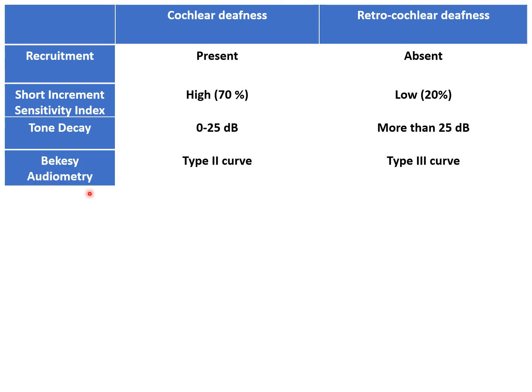Bekesy audiometry can also differentiate cochlear and retro-cochlear pathology. It is a type of self-recording audiometry. In cochlear pathology, we get a Type 2 curve in Bekesy audiometry, while for retro-cochlear pathology, we get a Type 3 curve.